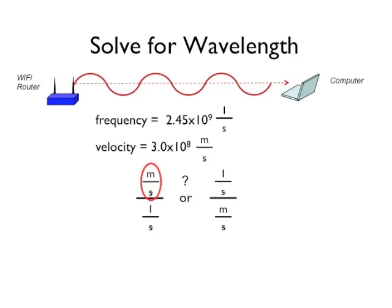Note that if the velocity is in the numerator, you will be left with meters for the wavelength. This is what we want.